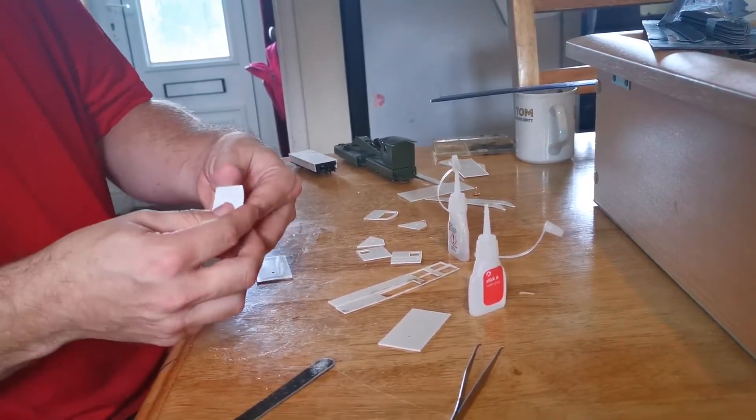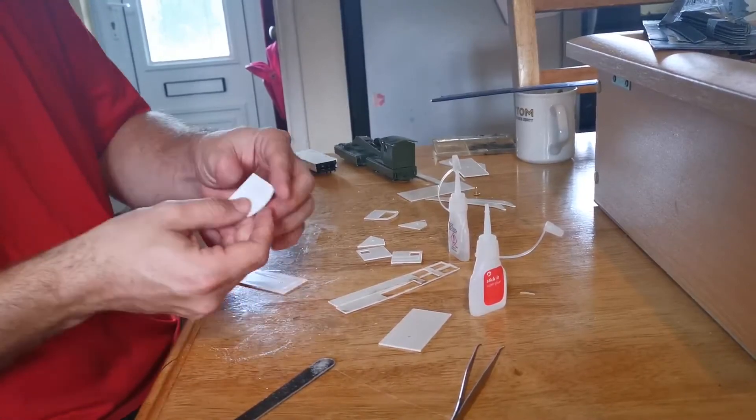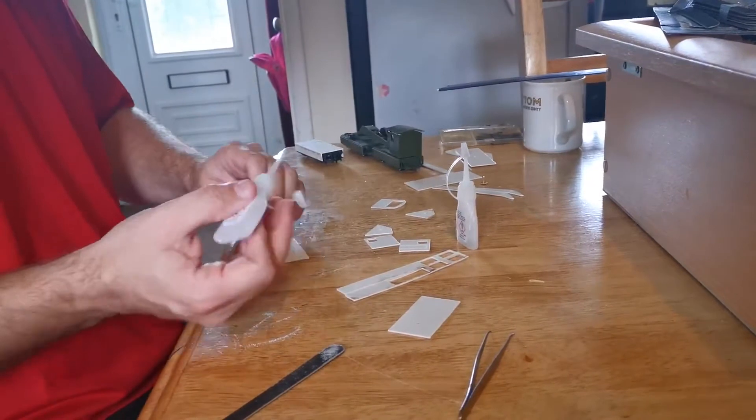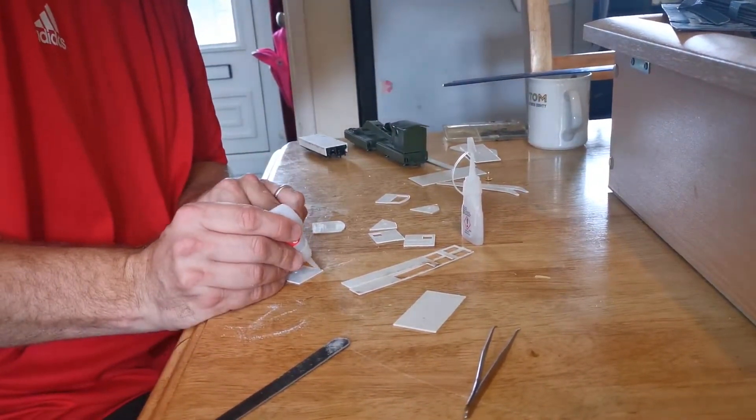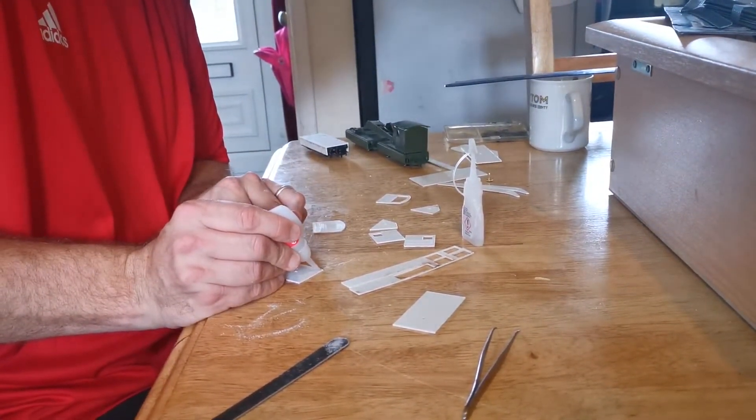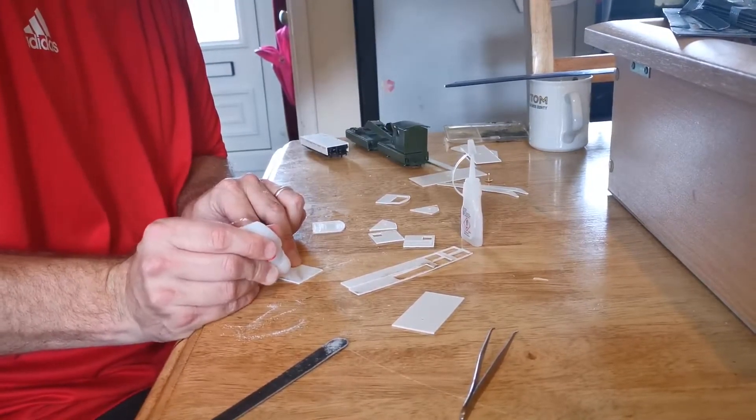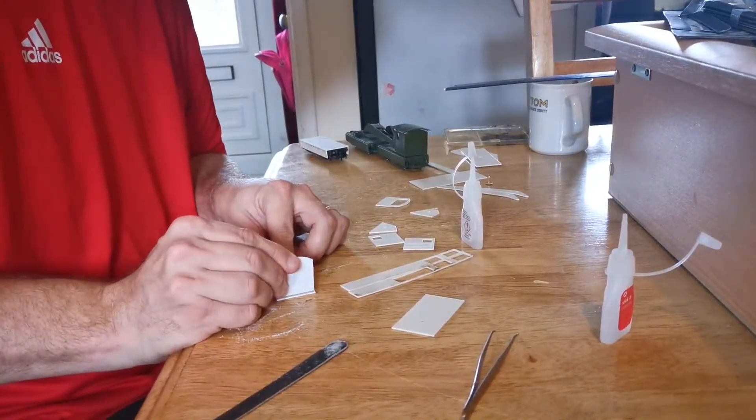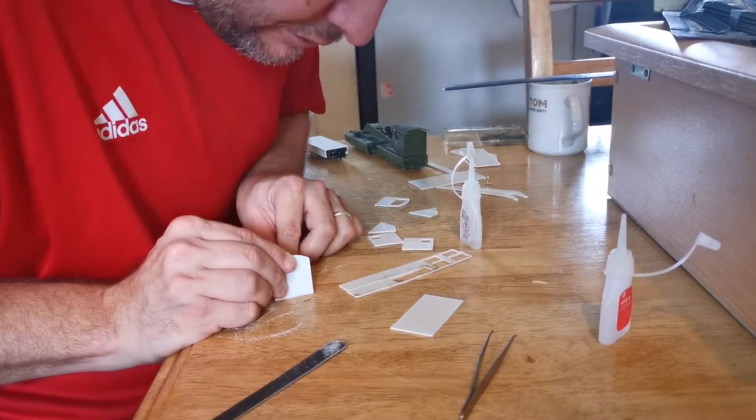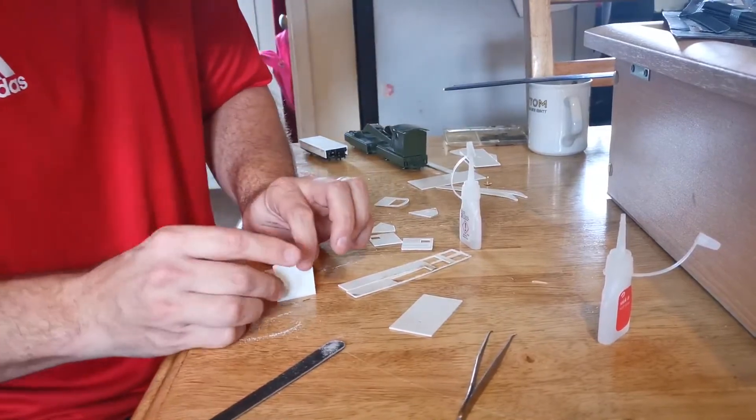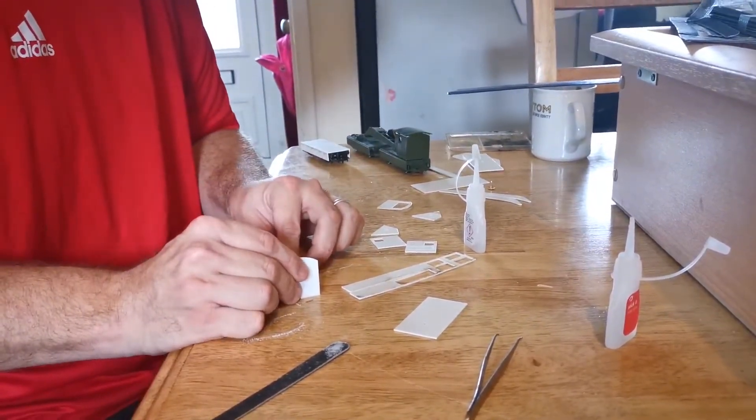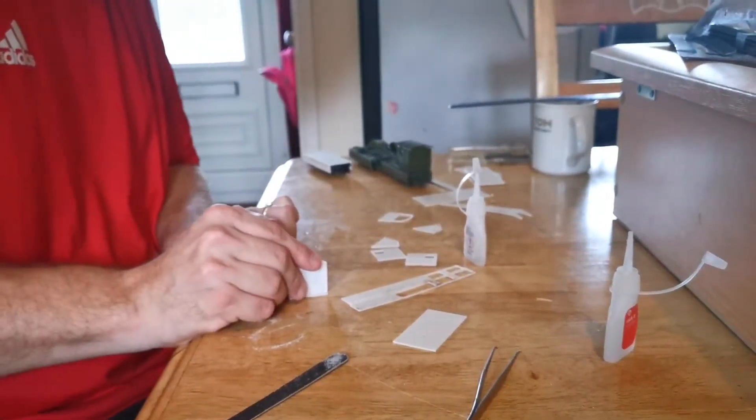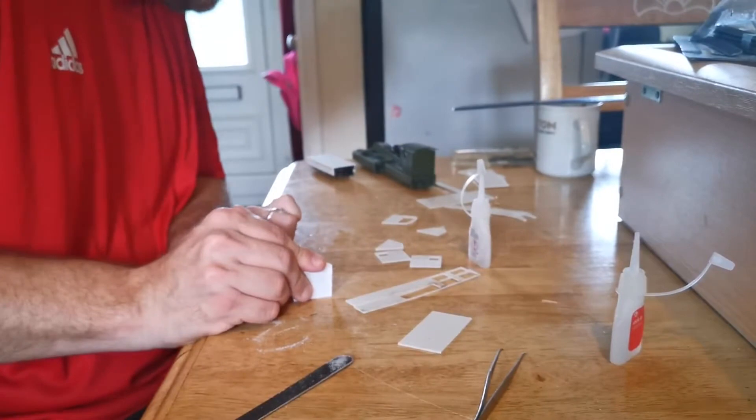I'm going to put the sanded side on the inside of the model so that any roughness that appears isn't visible on the finished model. A couple of drops of super glue on the rear of the base, and sit that on there. Making sure that it's nice and square and level. It would help if I got it the right way round actually, sorry. Turning it round, get it on the right end, make sure it's square and level, hold it for a few seconds.